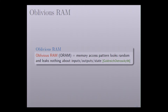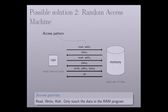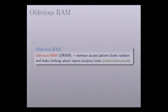There is a variant of the standard RAM program called Oblivious RAM, first introduced by Goldreich and Ostrovsky in 1996. In the standard RAM program, if we encrypt the data, the access pattern can still leak important information. For example, if the CPU is trying to access the same memory location over and over again, then the adversary will notice that, which leaks important information. But in the Oblivious RAM, the memory access pattern looks random and leaks nothing about the input, output, or the state.